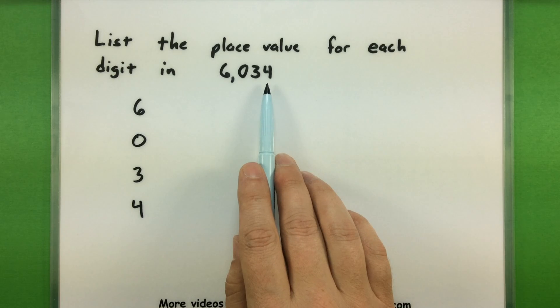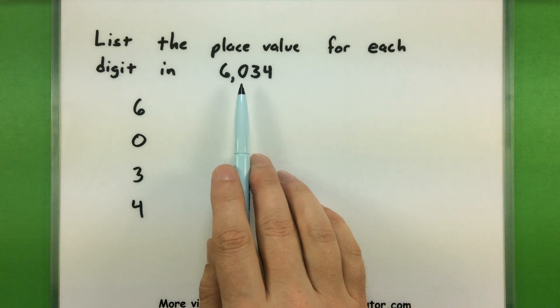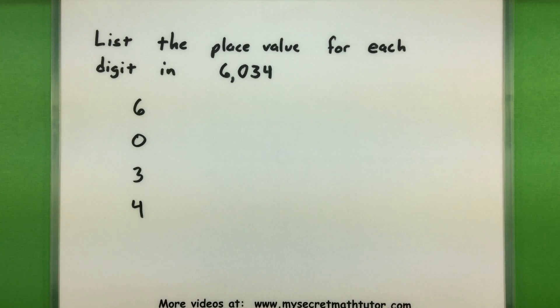Starting with the 4, we're in the ones place, then we're in the tens, the hundreds, and the 6 would be in the thousands place.